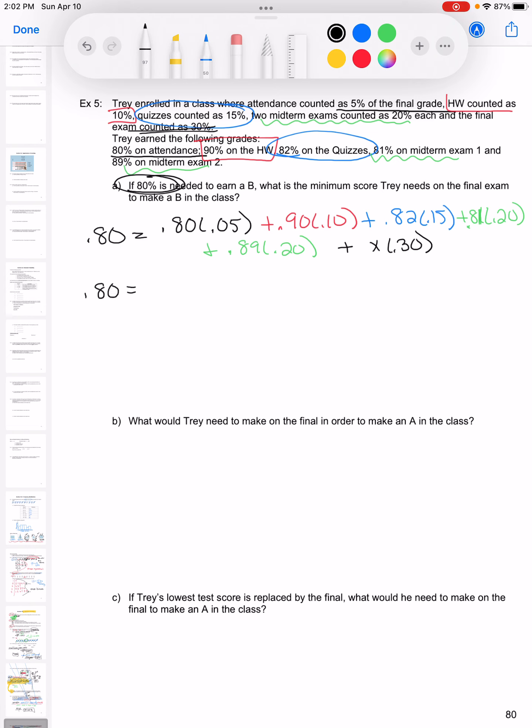All right, I'm going to reduce this down. So 0.80 times 0.05 is 0.04. 0.90 times 0.10 is 0.09. I'm just multiplying all these in my calculator. I'm going to combine my like terms. So all the ones that don't have an X, I'm going to combine together. And that gives me 0.593 plus 0.30X is equal to 0.80.